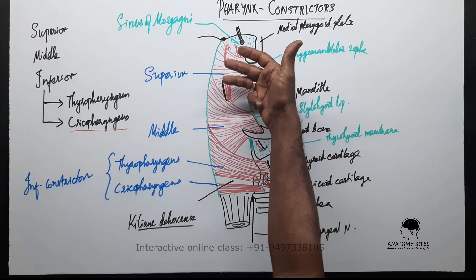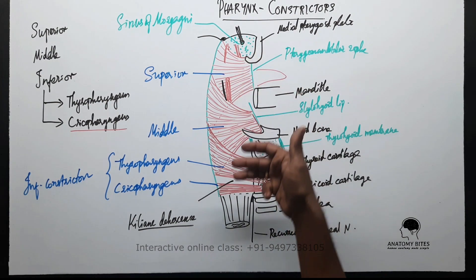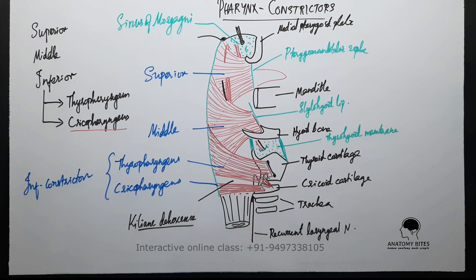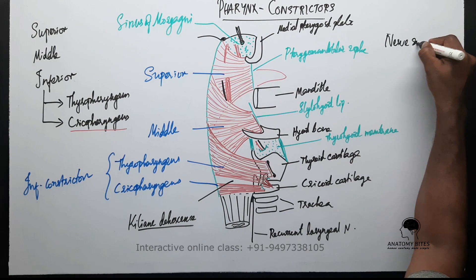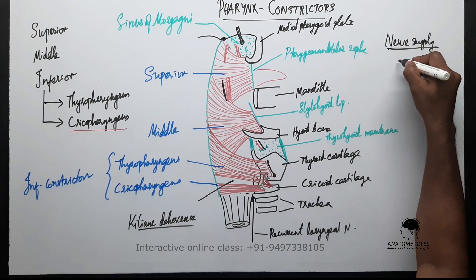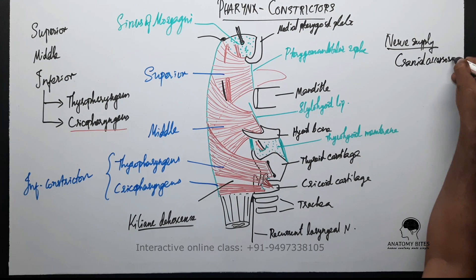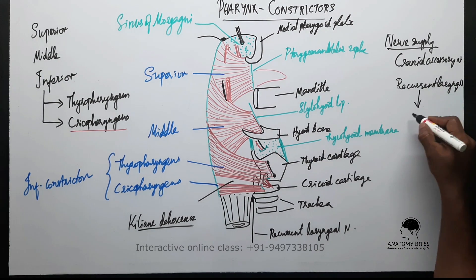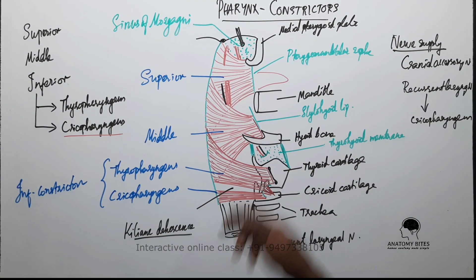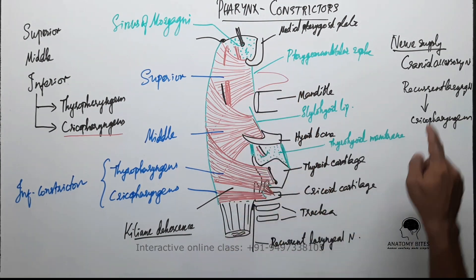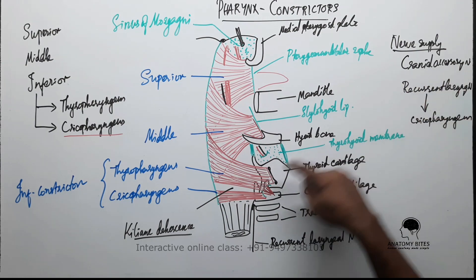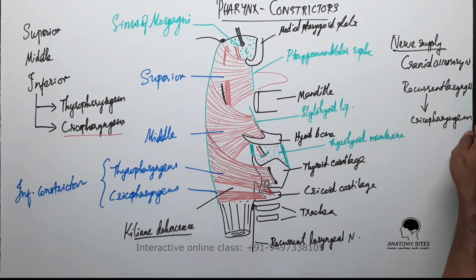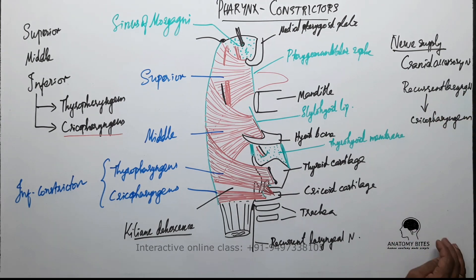All three muscles are skeletal muscles. These constrictors help to squeeze food down into the esophagus. All three constrictors are supplied by the cranial accessory nerve. The inferior constrictor, in addition to the cranial accessory nerve, is also supplied by the recurrent laryngeal nerve and the external laryngeal nerve.